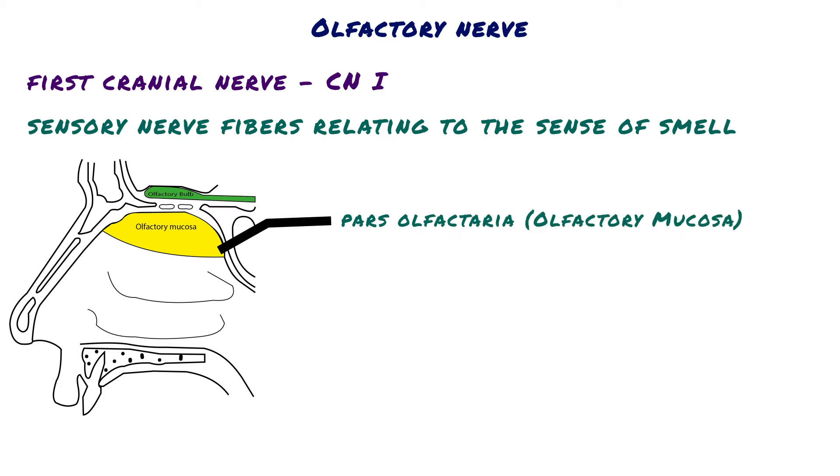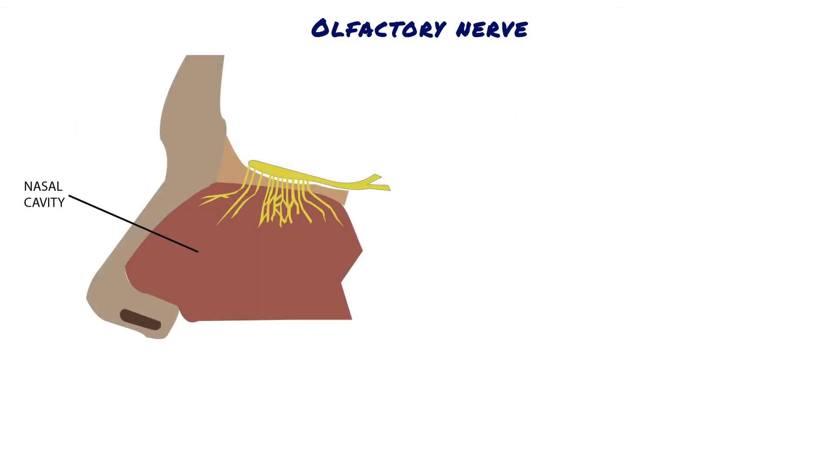Bipolar neurons related to the sense of smell and receptors formed by the peripheral extensions of these neurons are located on the mucosa covering this region. The peripheral extension of each neuron ends with 10-20 cilia extending to the mucous surface. These cilia are structures that are sensitive to odors.